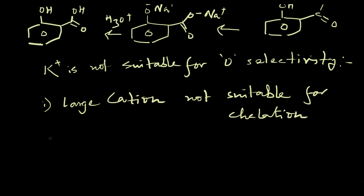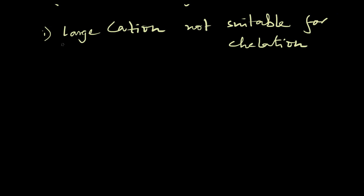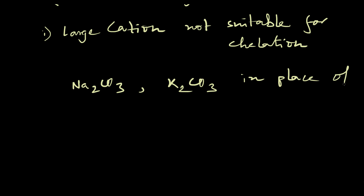These are the general aspects of the Kolbe-Schmidt Reaction. The reaction can also be carried out by using sodium or potassium carbonate in place of carbon dioxide. Thank you for watching this video.